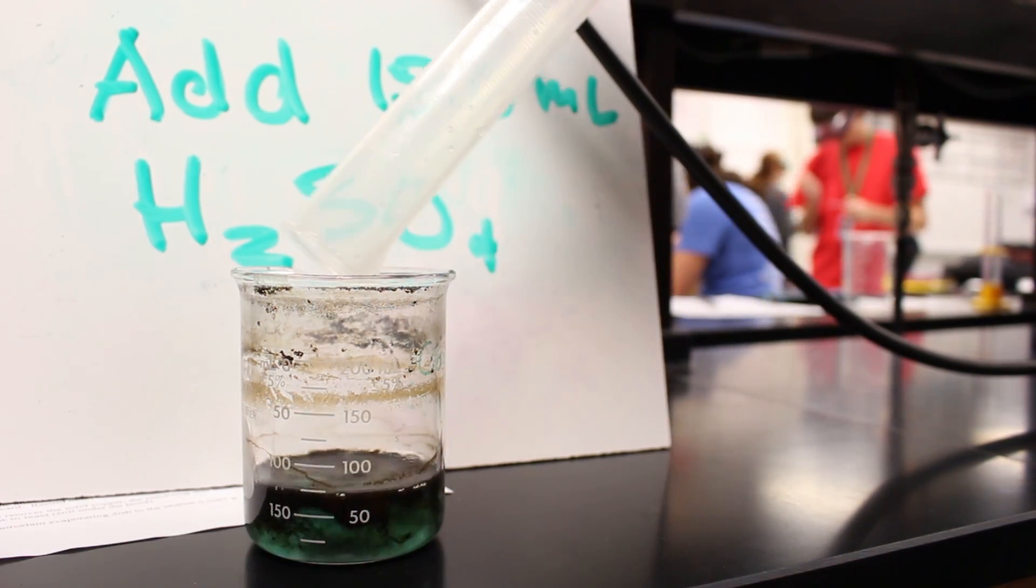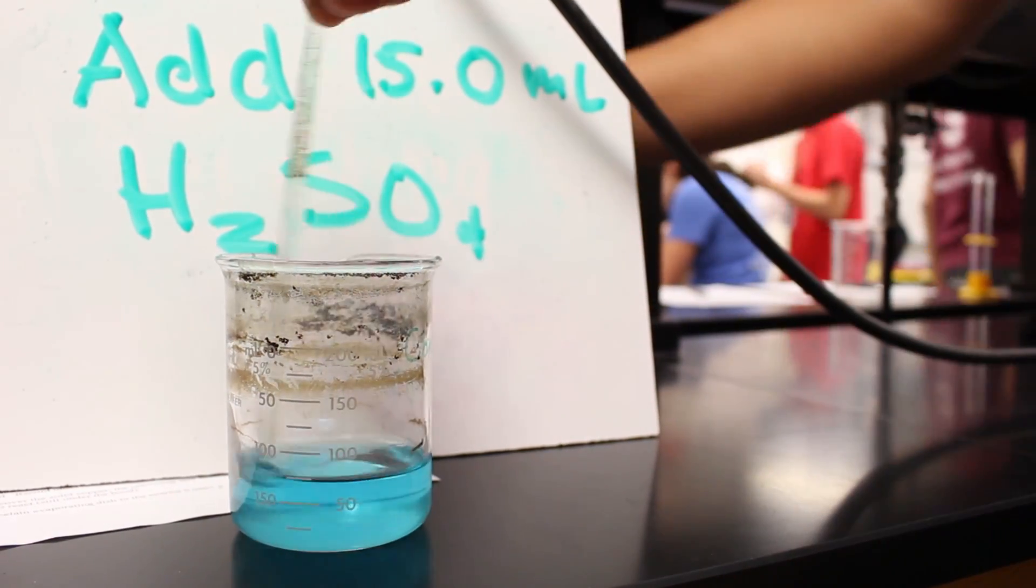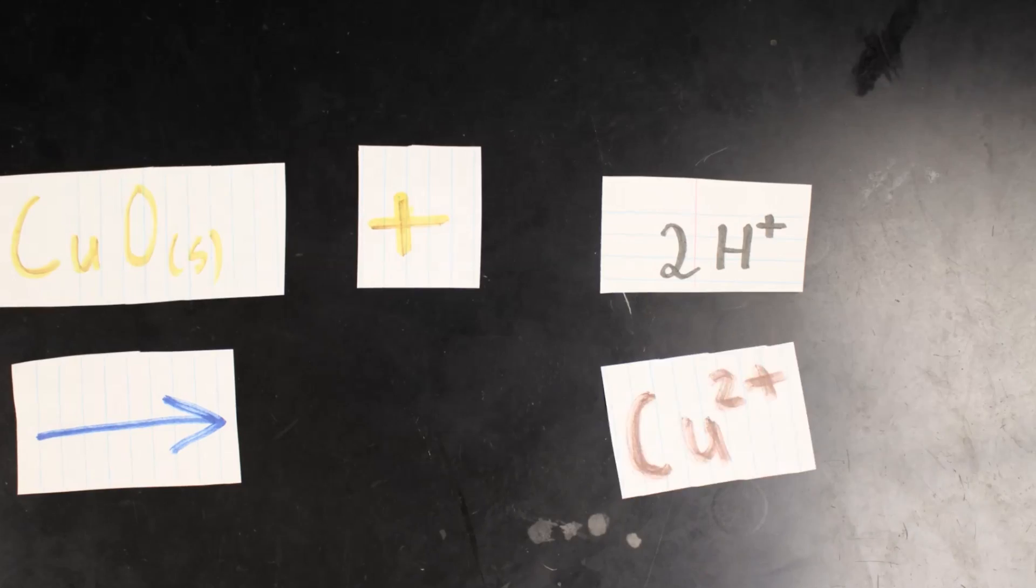We added 15 milliliters of 6 molar sulfuric acid which allowed the copper oxide to react with hydrogen ions forming cupric ions and water.